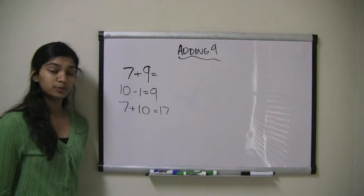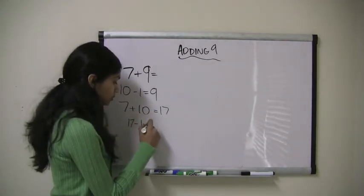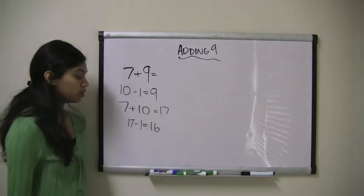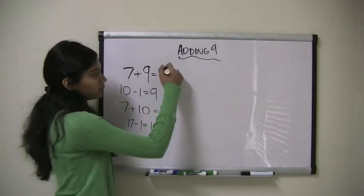And remember, I still have to subtract 1 from 17. So 17 minus 1 equals 16. So what do you think 7 plus 9 must equal? Yeah, it equals 16.